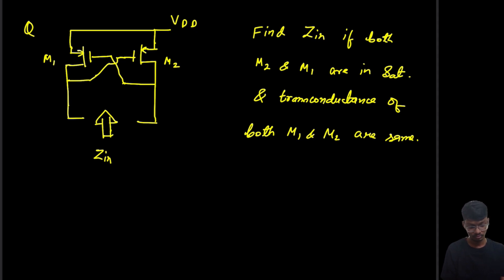Hello everyone, we have been given this cross-coupled circuit which has two MOSFETs M1 and M2. We have been told to find the input impedance, and that M1 and M2 are in saturation and the transconductance of both MOSFETs are the same. Let's assume both of them are gm.